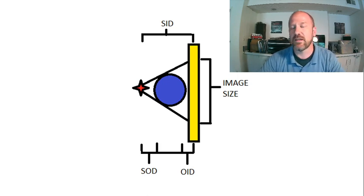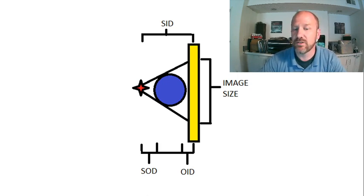Here's another example of how we could magnify the image, and it would be by reducing the SID. So in this case, we kept the OID exactly the same, but we reduced the SID. And so we would see a similar image size increase.